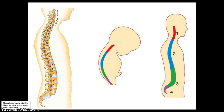Here's our vertebral column. Up in the neck are cervical vertebrae 1 through 7, named C1 through C7. These are the thinnest vertebrae in the entire body — short and thin. They carry very little weight. C1 and C2 have special names.